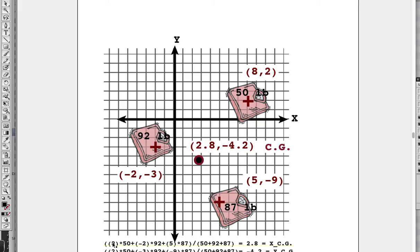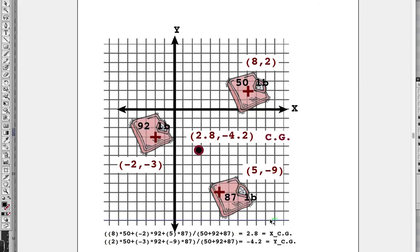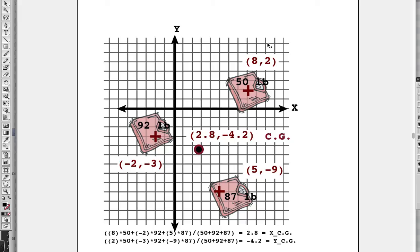Using the X coordinate and the weight, we summed all those products and divided by the sum of all three weights. From that we came up with the X CG and the Y CG. We just took the Y coordinates times weight, and we got the Y CG.